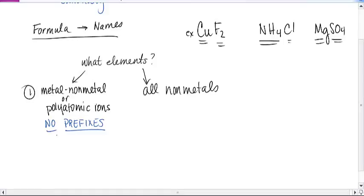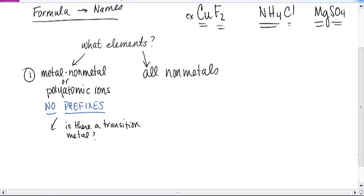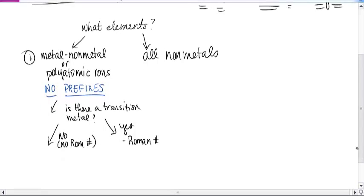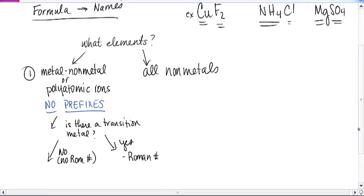So what do we have to look at? We have to ask ourselves, is there a transition metal from the periodic table. Because as you know, if there is a transition metal, if the answer is yes, then we need to include a Roman numeral in the name. If the answer is no, then there's no Roman numeral.